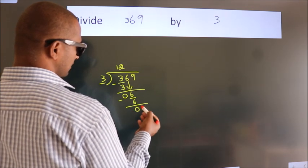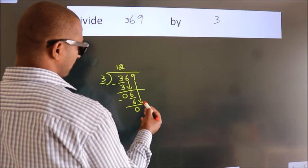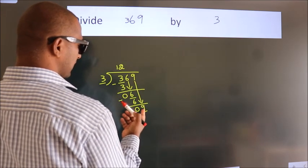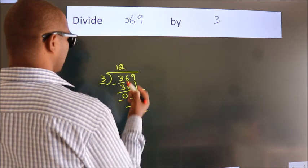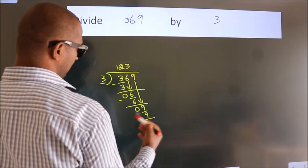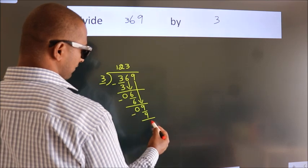After this, bring down the beside number. So 9 down. So 9. When do we get 9? In 3 table: 3 threes, 9. Now we subtract. We get 0.